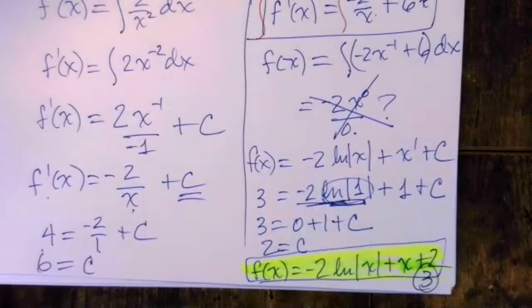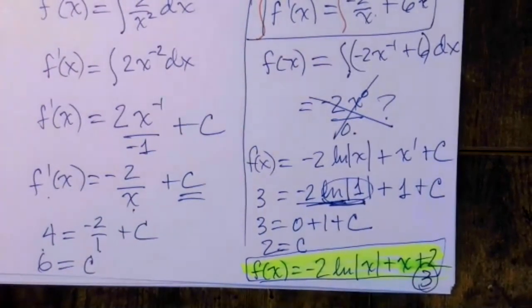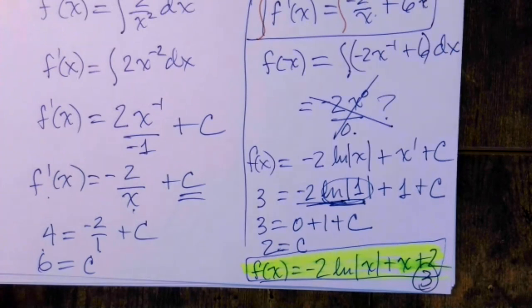The short version: integral means anti-derivative, and that S symbol is the notation. We throw plus C on all the time because when you do anti-derivative you don't know if there was a constant, so we put it back even if it wasn't there. Solving a differential equation means getting rid of the derivatives — we typically end up doing anti-derivative. The proper notation is to separate variables and then integrate both sides. Thanks for being here for Sanford FlipMath, the home edition. Bye.